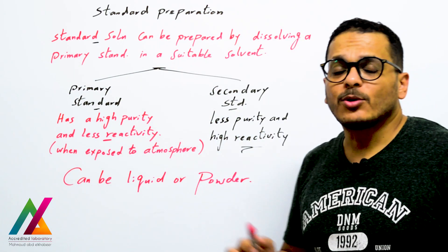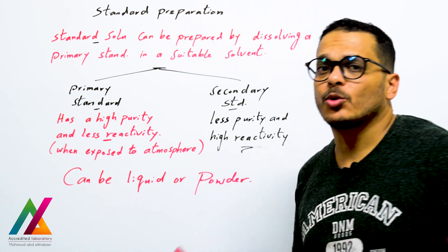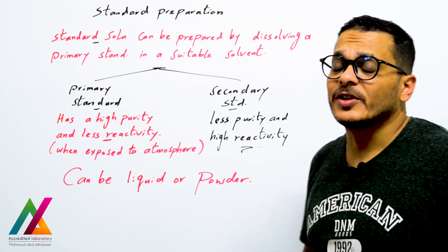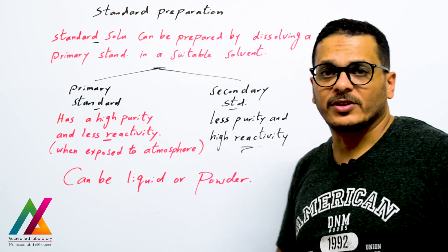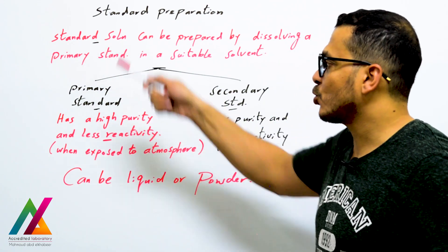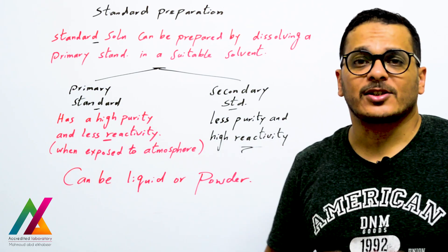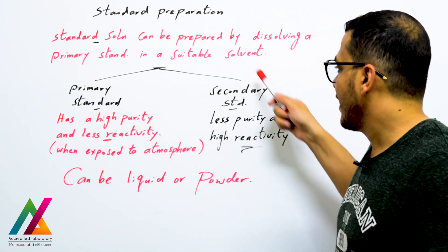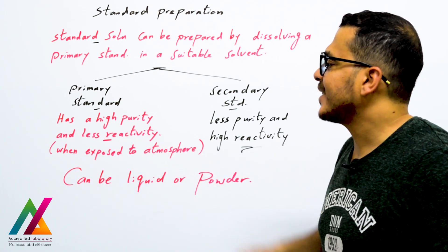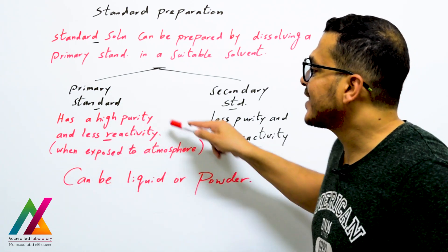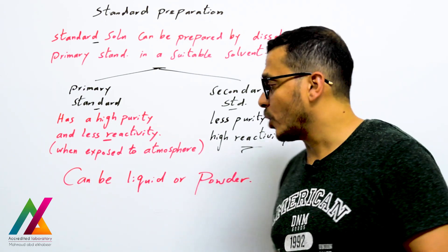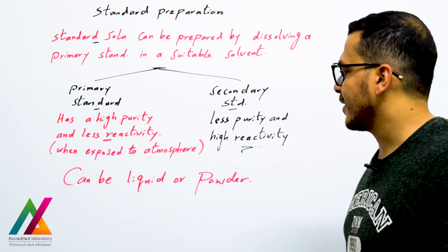First: standard preparation. How to prepare your standards inside the lab, whether you have liquid or powder standards. A standard solution with a known concentration can be prepared by dissolving a primary standard in a suitable solvent. You have primary standards and secondary standards. Always go for primary standards because they have high purity and less reactivity when exposed to the atmosphere. Secondary standards have less purity and high reactivity.